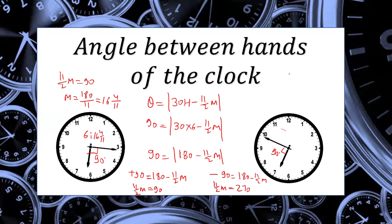The second instance: (11/2)M = 270, so M = 540/11 = 49 and 1/11 minutes. So the two hands are at 90 degrees after 6 at two times: 6:16 4/11 and 6:49 1/11. These are the two instances between 6 and 7 when the hands are perpendicular to each other.